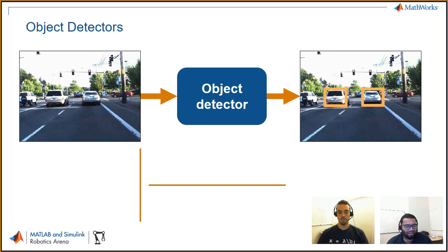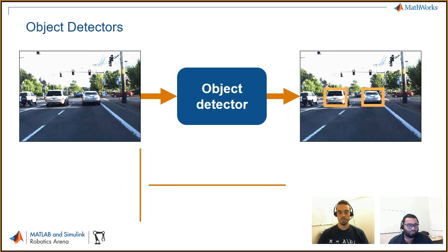An object detector is basically a computer program that can help you identify different objects of interest in images — this could be still images or a stream of images. It's a very common thing used in computer vision, especially with the whole autonomous systems trend, since your autonomous system needs to know what is in its surroundings, making the camera a vital part of that.